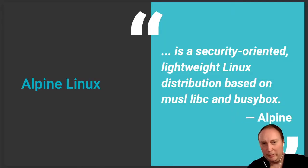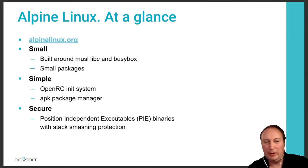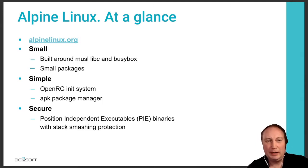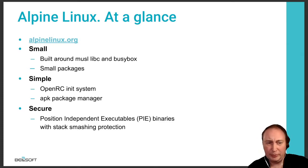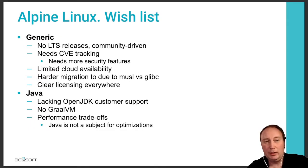Let me quickly recap what Alpine Linux is. It's a small distro based on two key components: the musl C library and BusyBox, the Swiss Army Knife tool. It is really small — the base container image is only around 4 megabytes. It also contains a package manager and there are a lot of packages available in Alpine Linux repositories.